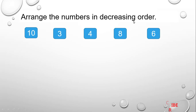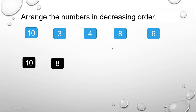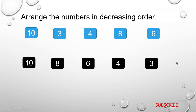Next, arrange the numbers in decreasing order. Decreasing order means from the biggest to the smallest. From these numbers we can see that 10 is the biggest. Next we go to 8, then we should go to 6, next should be 4, and finally we get 3. And that is our decreasing order.